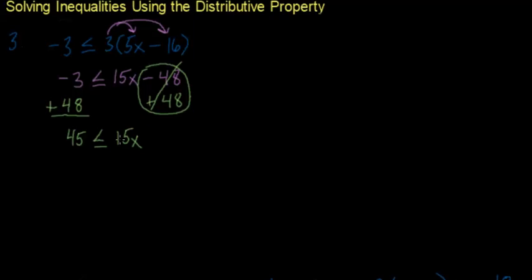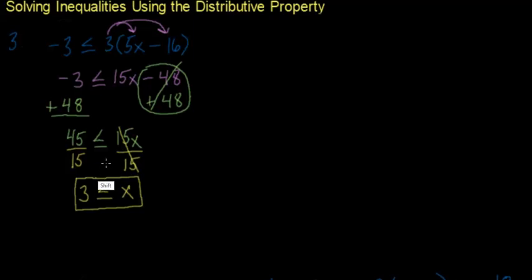I still need to isolate x, which is being multiplied by 15. The inverse of multiplying by 15 is to divide by 15, so I divide both sides by 15. This cancels out, leaving x on the right, and 45 divided by 15 is three, giving us 3 is less than or equal to x. For the graph: a closed circle at three since it's equal to, and shaded to the right, because three is less than four, five, and all numbers to the right.